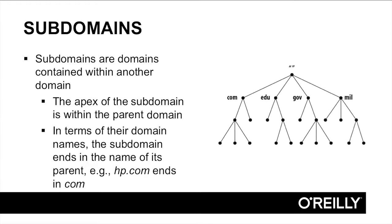So, for example, infoblox.com is a subdomain of com because it ends in com. In the diagram on the right, you can see the domain com and within it, a subdomain whose apex is within the com domain, such as infoblox.com.